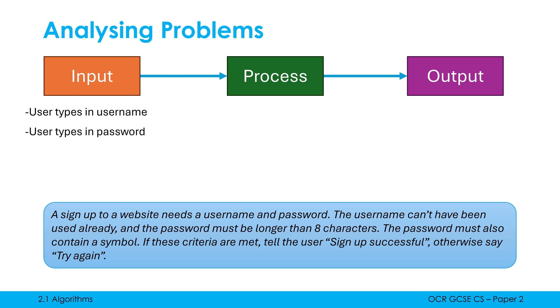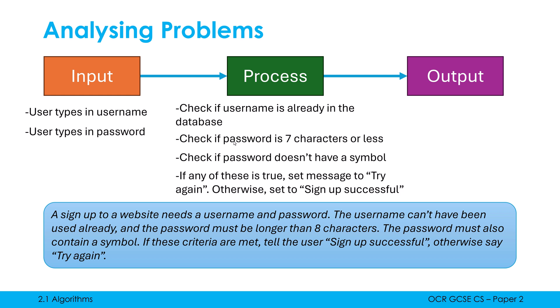I've got a few processes to do, most involve just checking stuff. So first of all, I'm checking to see if the username is already in the database, is there already a username with that value? And then we'll do a check to see if a password is seven characters or less. I'll then check to see if it doesn't have a symbol. I've phrased these three checks